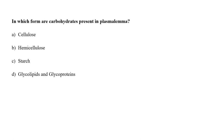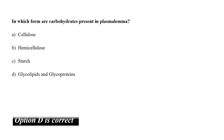In which form are carbohydrates present in the plasma membrane? A. Cellulose, B. Hemicellulose, C. Starch, or D. Glycolipids and glycoproteins? Lipids and proteins on the cell membrane surface often have short carbohydrate chains protruding out from the cell surface, known as glycolipids and glycoproteins. They form hydrogen bonds with water molecules surrounding the cell to stabilize membrane structure and can serve as markers allowing cells to recognize each other. So the correct answer is option D.